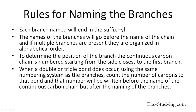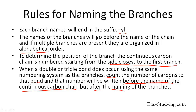Moving on to the branches: the branch ends in the suffix -yl. The names of the branches will go before the name of the chain. And if multiple branches are present, they are organized in alphabetical order. To determine the position of the branch, the continuous carbon chain is numbered starting from the side closest to the first branch. When a double or triple bond occurs, as in the alkene or alkyne group, we count the number of carbons to that bond, and the number will be written before the name of the continuous carbon chain but after the naming of the branches.